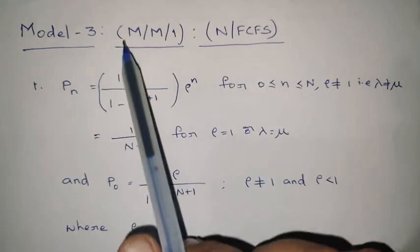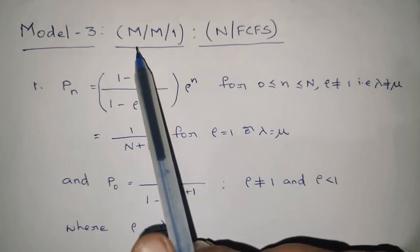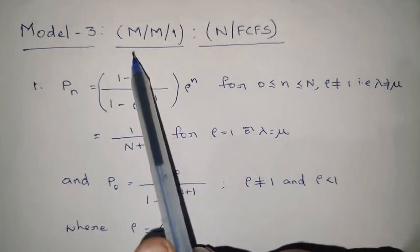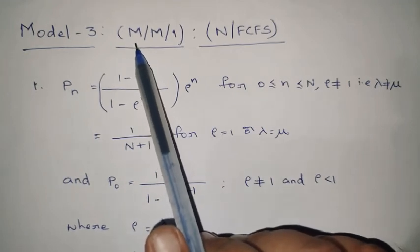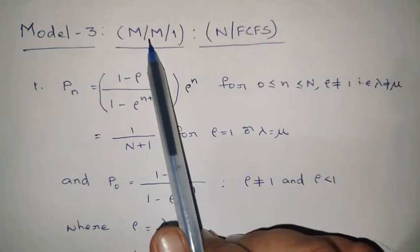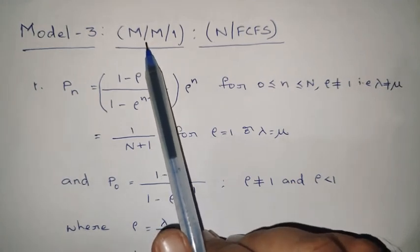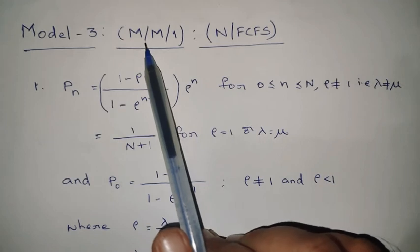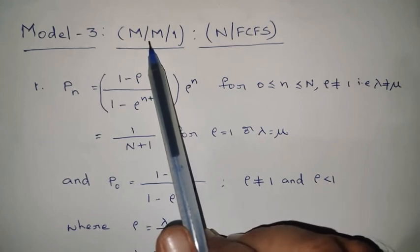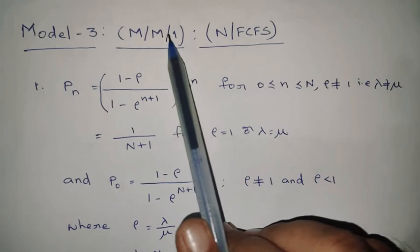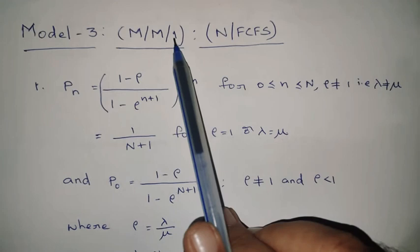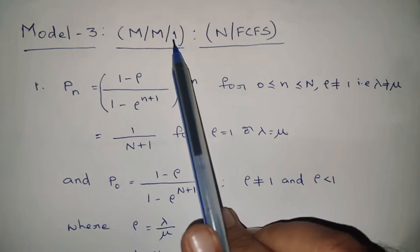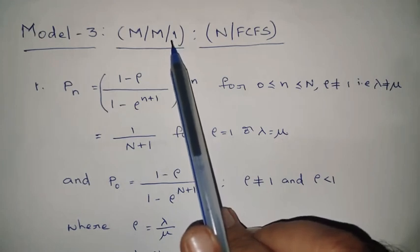Here the first M means the arrival of the customer follows either a Poisson distribution or exponential distribution. The second M represents the service distribution, which is also either Poisson or exponential distribution. And 1 represents the number of servers, so here the number of servers is 1.